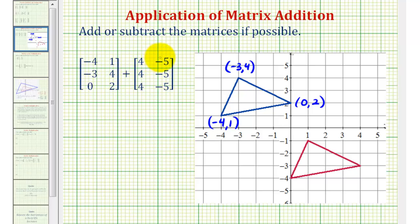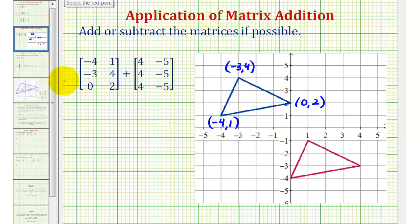One application of matrix addition would be a translation, or horizontal and vertical shift, on the coordinate plane. For example, if we consider the vertices of this blue triangle, we can organize these points in a matrix as we see here on the left using a three by two matrix. Notice each row in this first matrix represents one of the vertices.